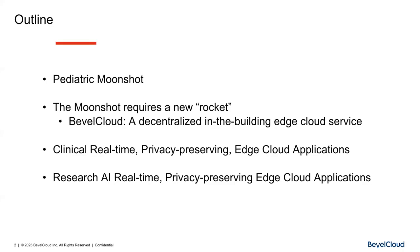I'm going to talk about the moonshot. Just as the original moonshot required a new rocket, we believe this moonshot will require a new rocket. I'll talk about a new capability we've developed called a decentralized in-building edge cloud, which is fundamentally an infrastructure, and how it could be applied clinically and in the research world — with particular focus on building AI applications.